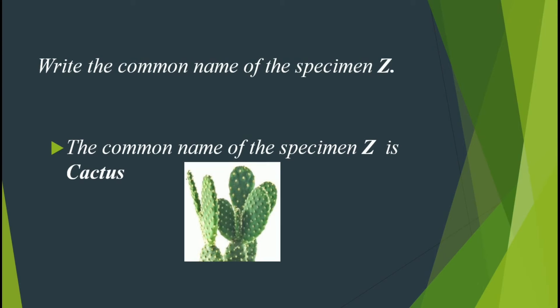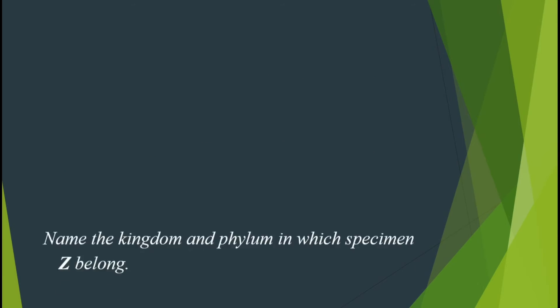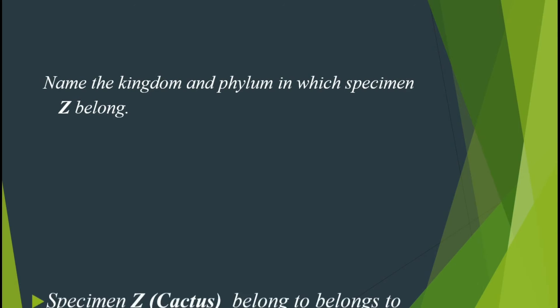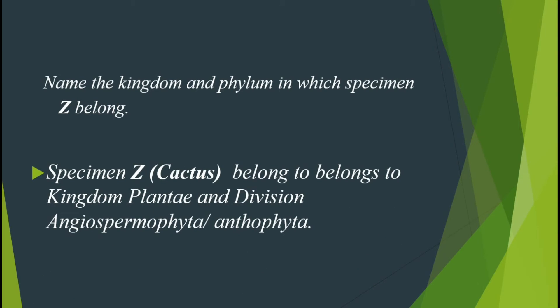The second question is asking us to name the kingdom and phylum in which specimen D belongs. Specimen D, which is a cactus, belongs to kingdom Plantae and division or phylum Angiospermophyta.